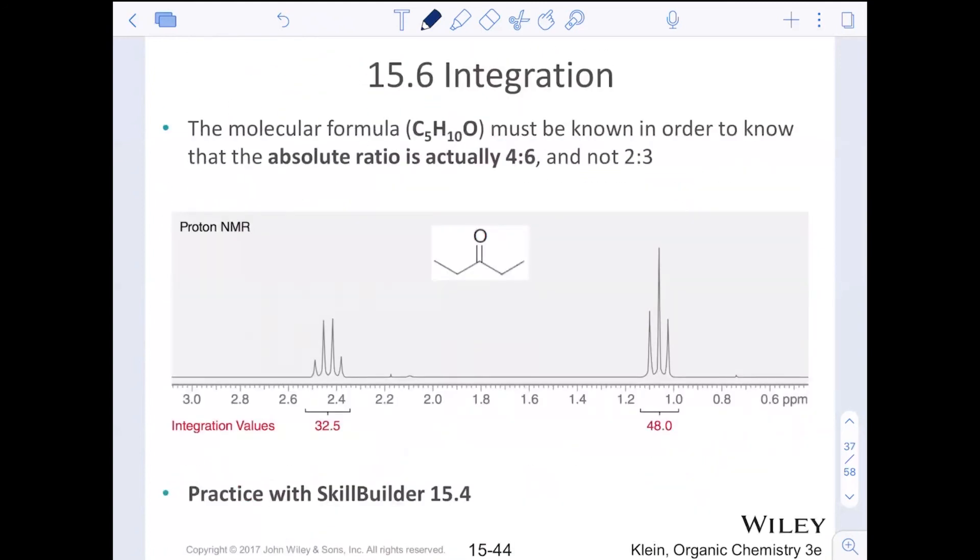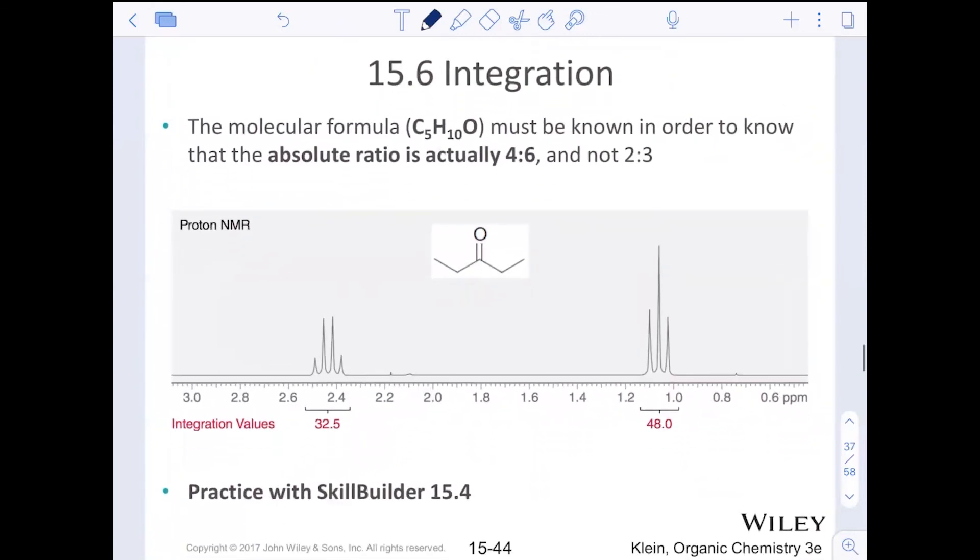We would see this type of an idea where we're at 35 or 32.5. We'd say divided by 32.5, divided by 32.5. We'd find the smallest whole number ratio and it would be a 2 to 3 ratio. What you would note is that if you were given a molecular formula, which typically you are, you would say, well, 2 plus 3 is 5. That does not add up to 10. So I can actually take those integration values and make them double. 4 plus 6, same 2 to 3 ratio, just adding them up to my CH10 there.